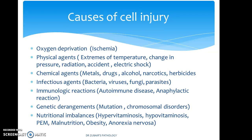Nutritional imbalances include hypervitaminosis, hypovitaminosis, protein energy malnutrition, obesity, and anorexia nervosa. It is thus very clear from the list that cellular injury can be caused by a wide variety of injurious agents. It could be grossly visible, or it could be at the microscopic or genetic level.